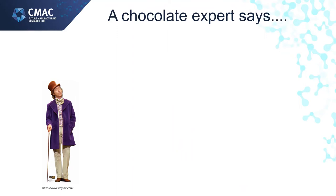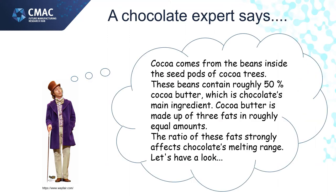What about chocolate? It comes from the beans inside the seed pods of cocoa trees. These beans contain roughly 50% cocoa butter, which is chocolate's main ingredient. Cocoa butter is made up of three fats in roughly equal amounts. The ratio of these fats strongly affects chocolate's melting range.